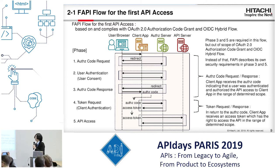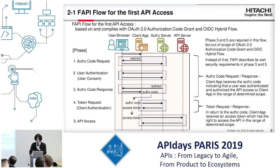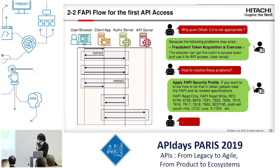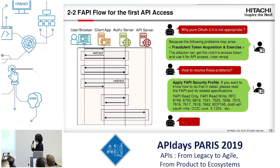The five phases are: OAuth code request, user authentication and consent, OAuth code response, token request, and finally API access. It seems that adopting pure OAuth 2 is not appropriate for security APIs providing financial services. A problem that may arise is fraudulent token acquisition, meaning an attacker changes or intercepts the victim's access token for API access.